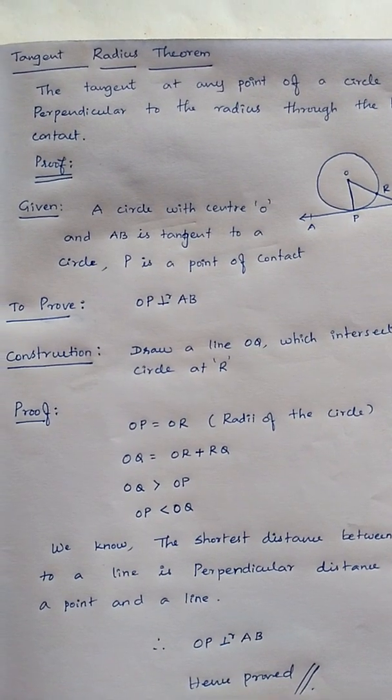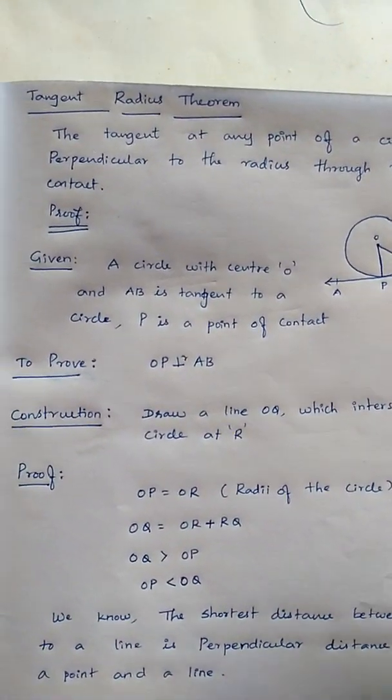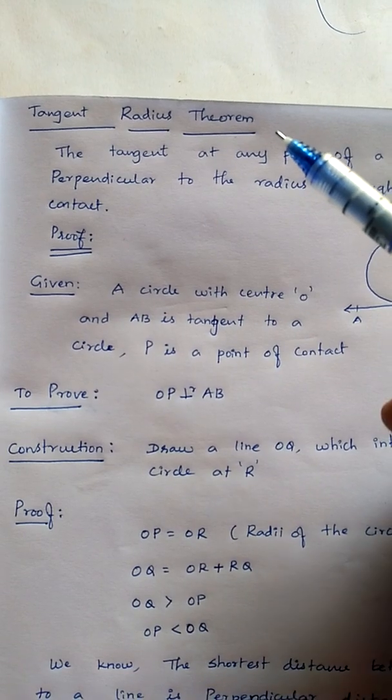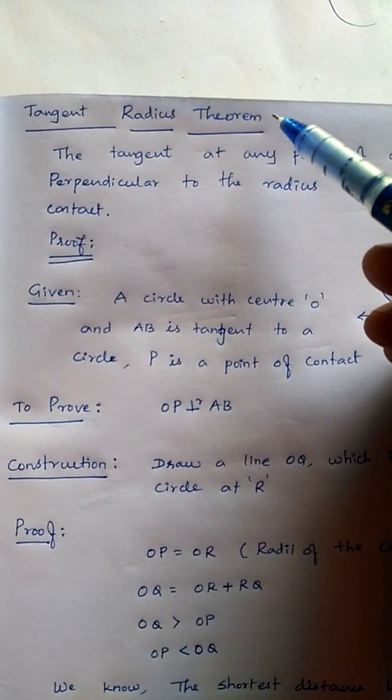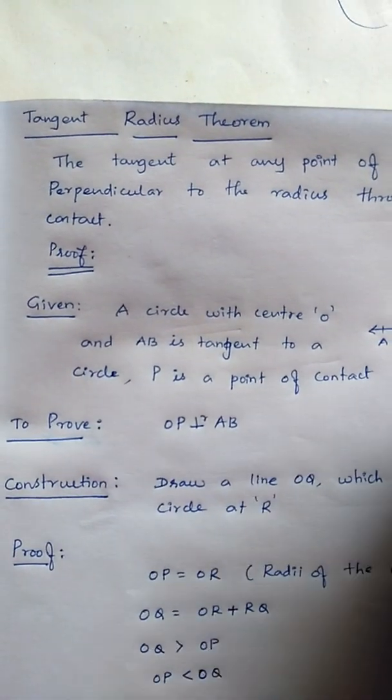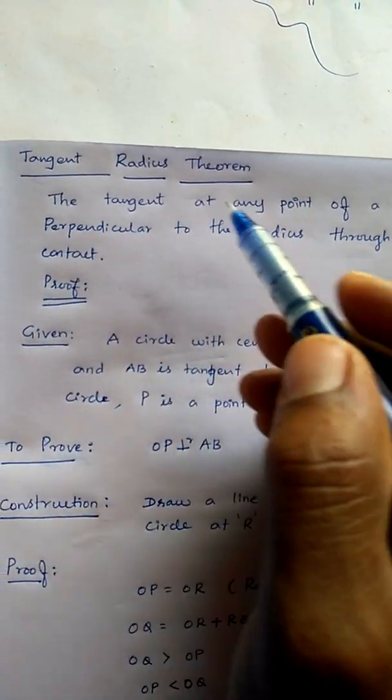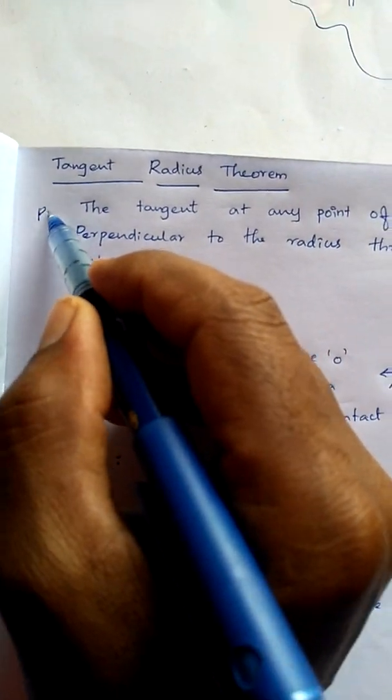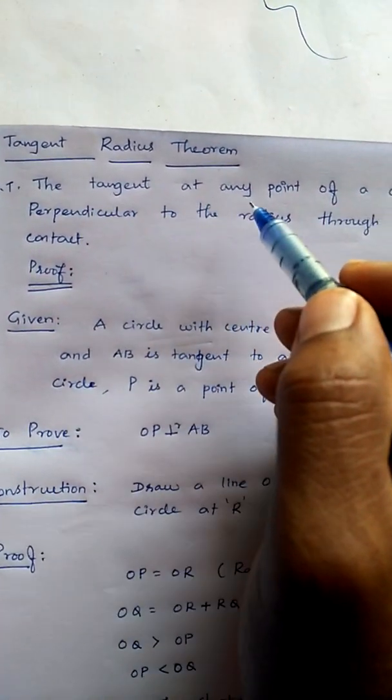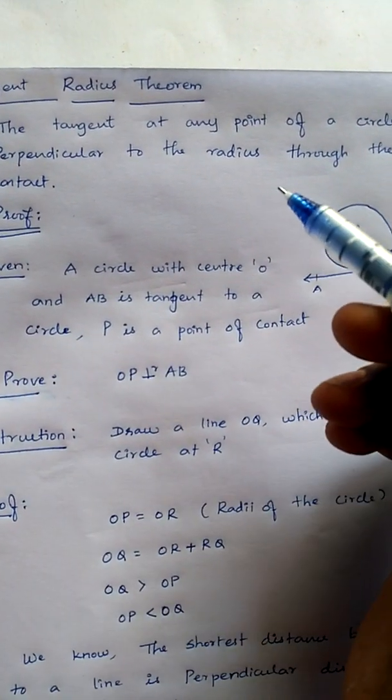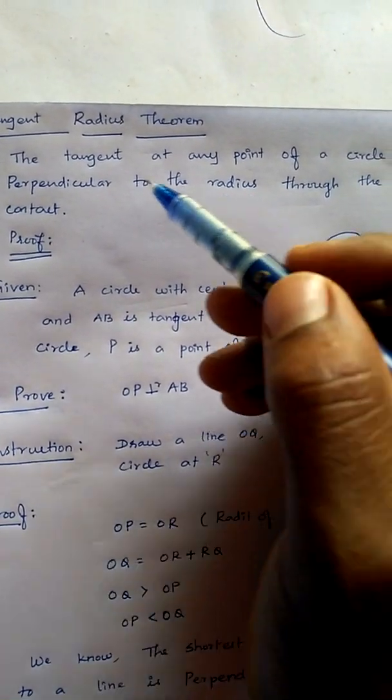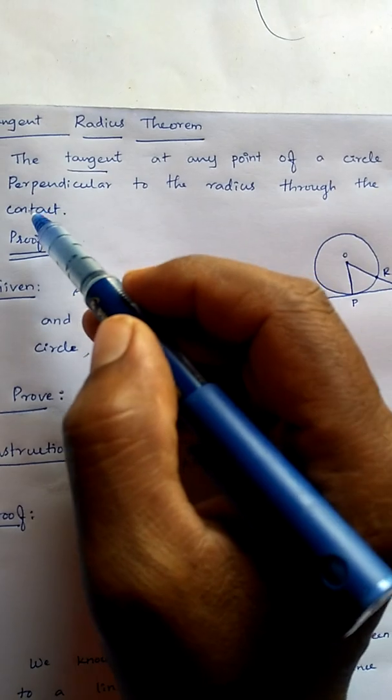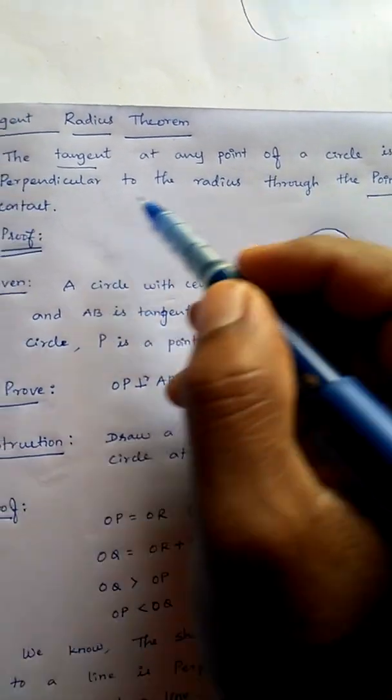Let's get into the first one: the tangent radius theorem. They will not ask you to prove the tangent radius theorem by name. They will ask with the statement only. Here we may get like this: prove that the tangent at any point of a circle is perpendicular to the radius through the point of contact.